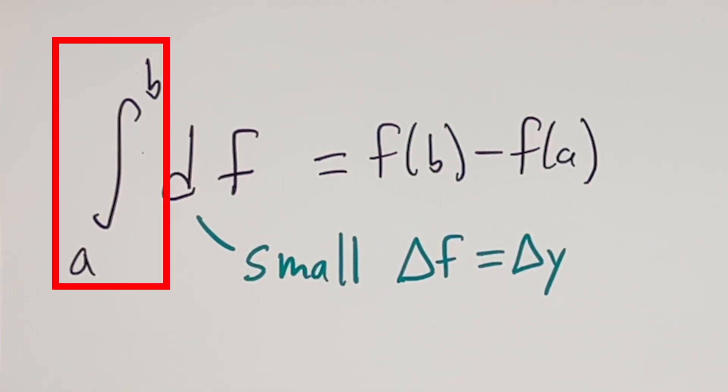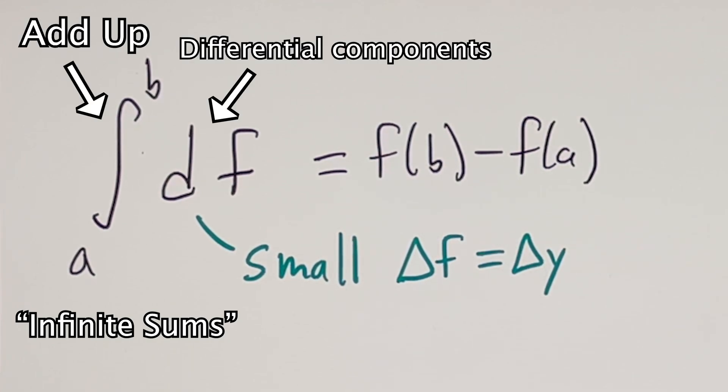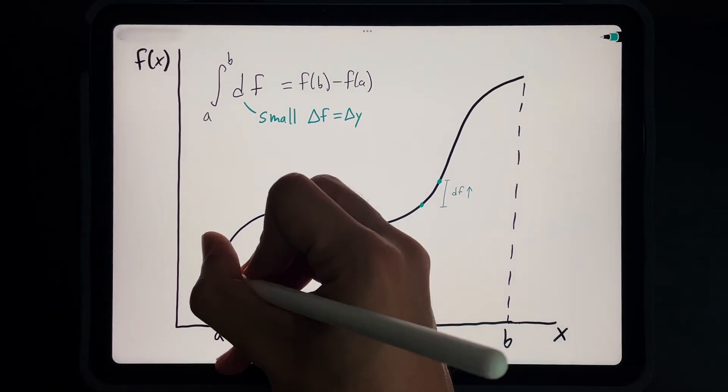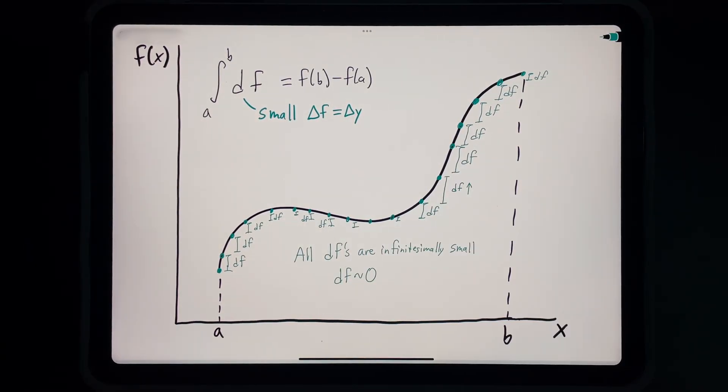Integrals can also be thought of as infinite sums. In our case, this integral means we're adding up an infinite number of infinitesimally small differential components df. So this integral is really telling us to add up all of the infinitesimally small changes in f from x equals a to x equals b.